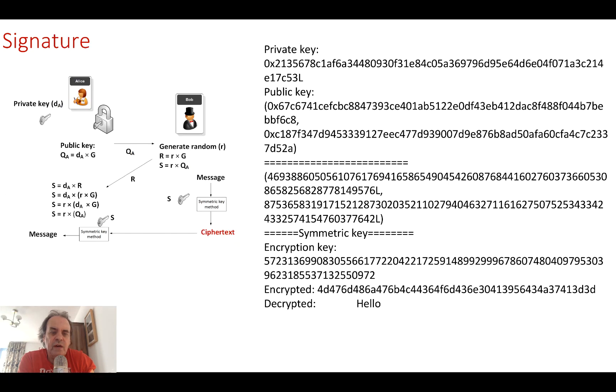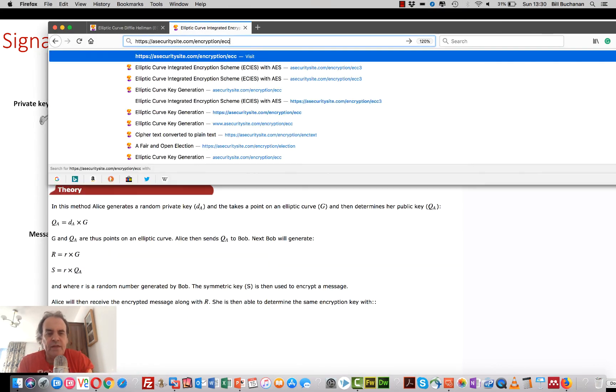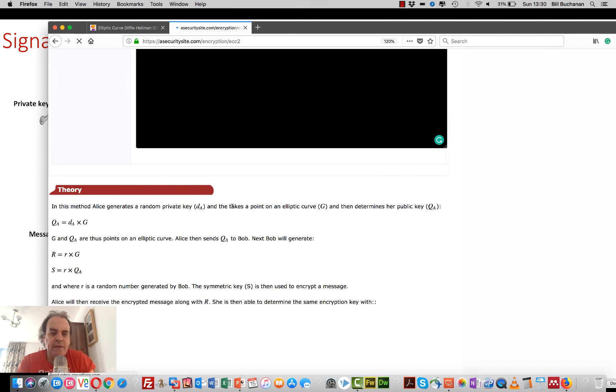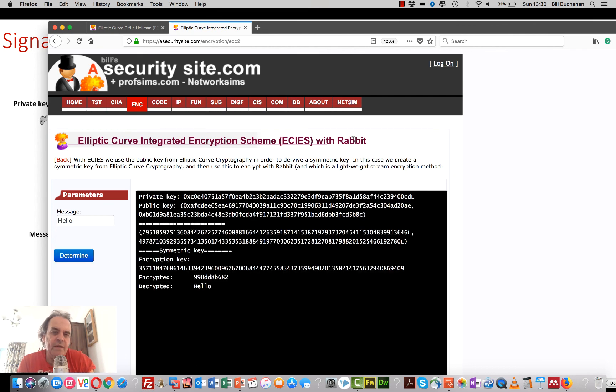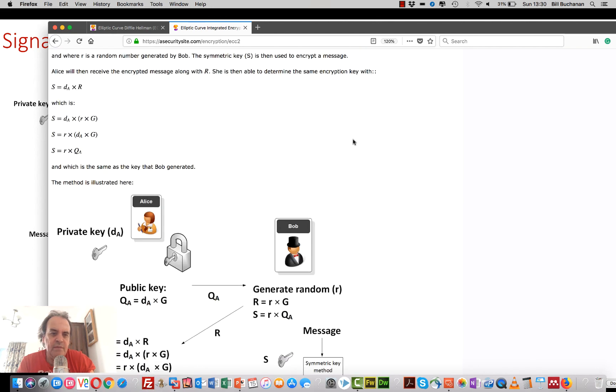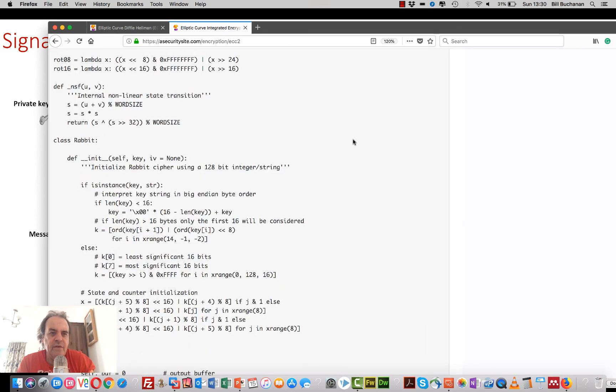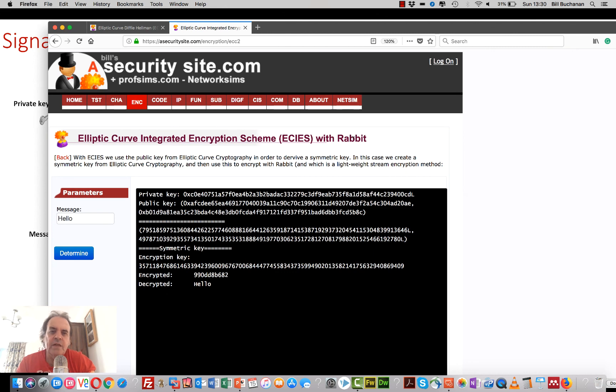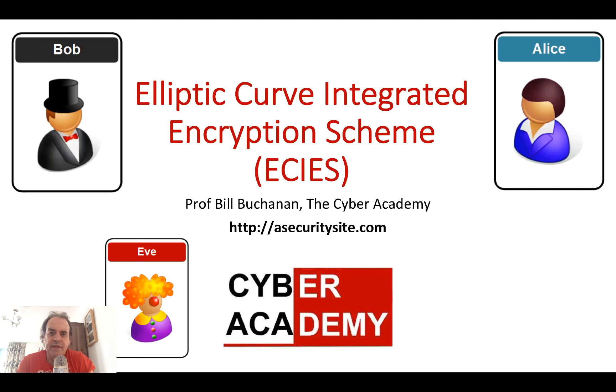We can use encryption methods such as AES, or we can also use lightweight cryptography because we just need to generate our key. It could be 128 bits or 256 bits. We can generate a key which will work with our symmetric key cipher. In this case, we're using a lightweight cryptography method called Rabbit, which is a stream encryption method, much faster than AES. That's how we can encrypt with Elliptic Curve Integrated Encryption.